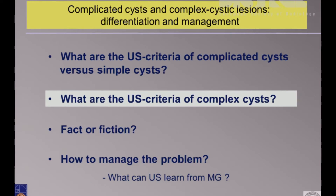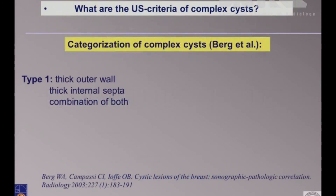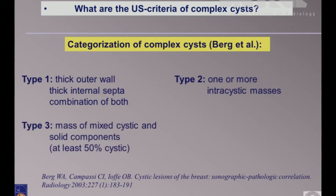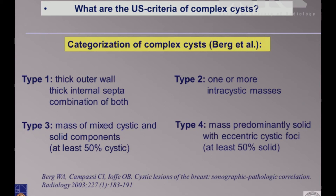What are the ultrasound criteria of complex cysts? Following Wendy Burke, she described four types from the morphological point of view only — not from the point of view of benignancy and malignancy. Type 1: thick outer wall, thick internal septum, or a combination of both. Type 2: one or more intracystic masses. Type 3: a mixed mass of cystic and solid components where the cystic component is more than 50%. Type 4: a mass predominantly solid with eccentric cystic foci, at least 50% solid.